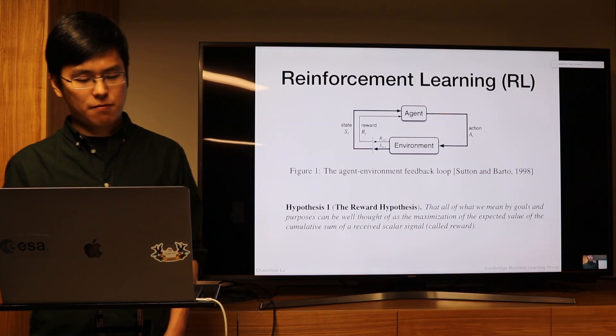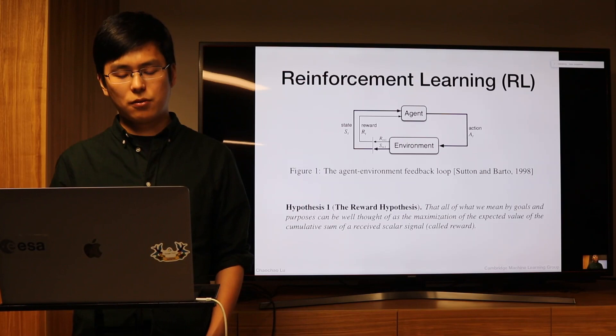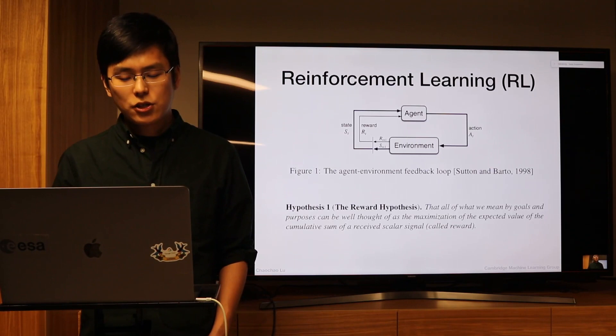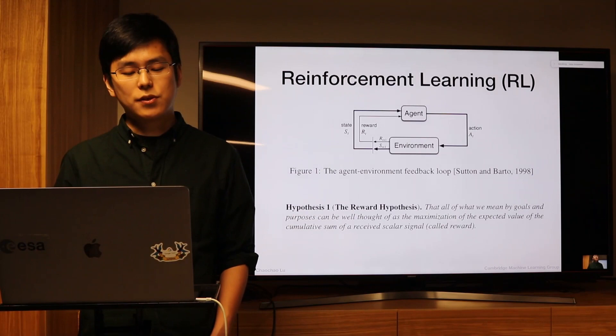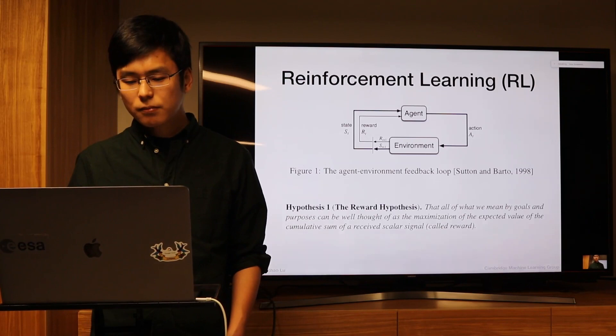Just to recall key RL concepts: at some state, the agent takes an action, gets a reward from the environment, and the action causes the environment to transition to the next state. The most important concept is the reward hypothesis — all tasks should be defined by a reward. But I think this is also the weakest concept in RL, because many problems are caused by poorly defined rewards.